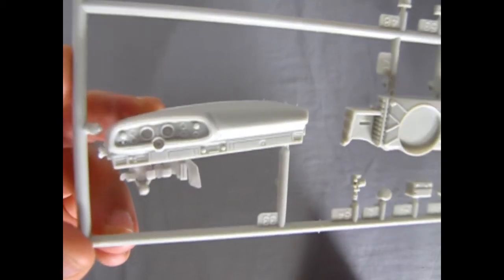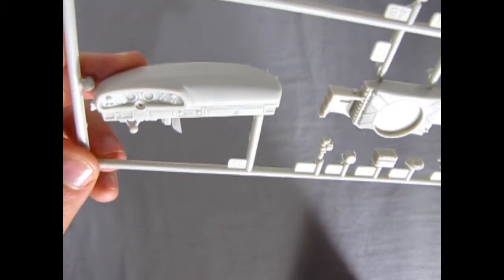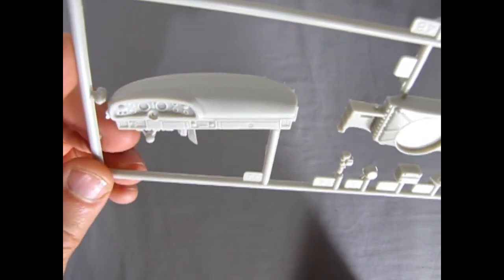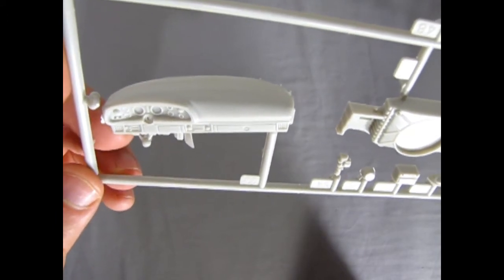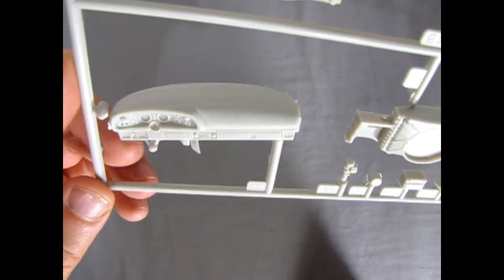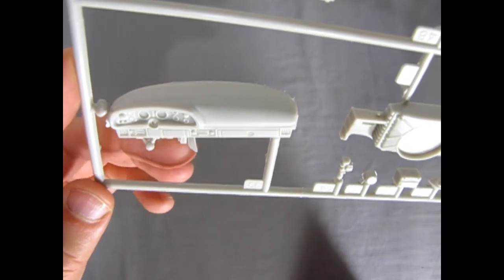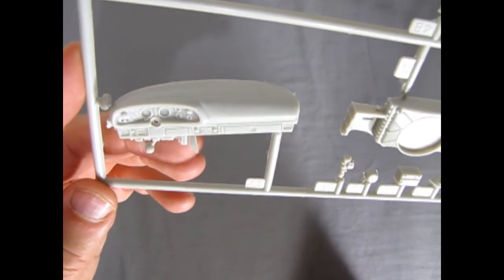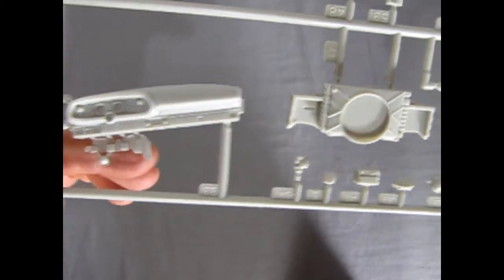There is the dashboard. Look at the gauges on there. Lots of neat stuff to paint. It's got all five pedals. Sorry, four pedals. All right, so you got your parking brake, your clutch and your brake, and your gas pedal. So all that nice stuff.